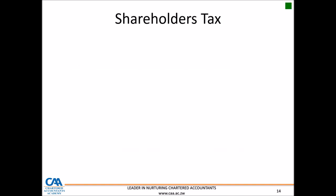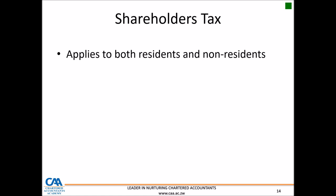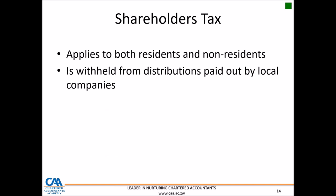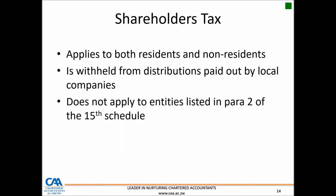The next withholding tax to look at is shareholders taxes, also called dividends taxes. These apply to both residents and non-residents, and arise when a distribution is paid out by local companies. It does not apply to entities listed in paragraph 2 of the 15th Schedule — for instance, when a company like Econet pays a dividend to a company like Old Mutual, that dividend is not subject to withholding taxes. However, when Econet pays a dividend to an individual such as Mr. Philip Chambati, a certain amount will need to be withheld from that dividend payment.